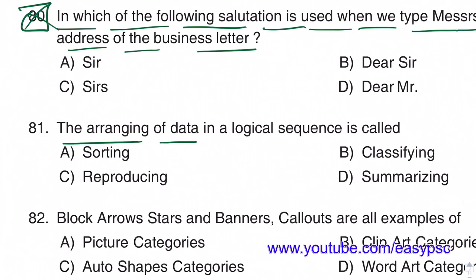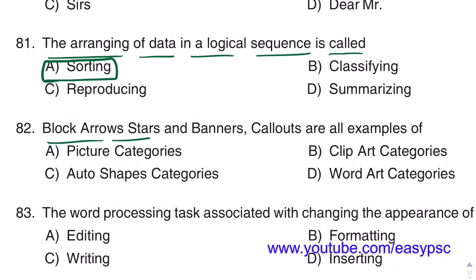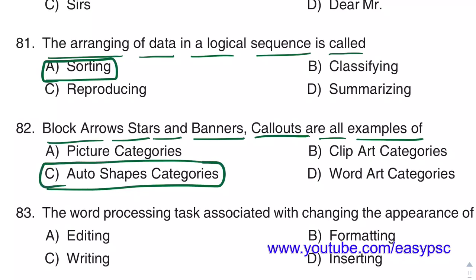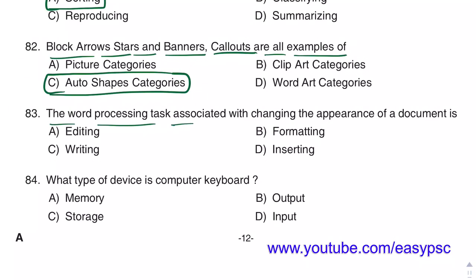The arranging of data in a logical sequence is called Sorting. Block arrows, stars, banners, and callouts are all examples of AutoShape categories. The word processing task associated with changing the appearance of a document is Formatting.